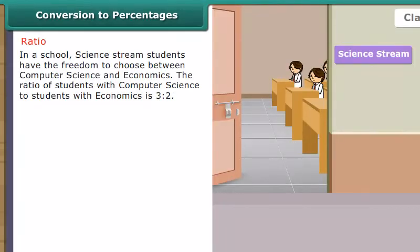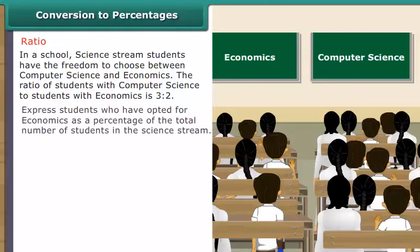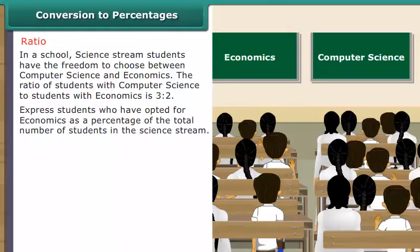Ratios. In a school, science stream students have the freedom to choose between computer science and economics. The ratio of students with computer science to students with economics is 3 is to 2. Express students who have opted for economics as a percentage of the total number of students in the science stream.